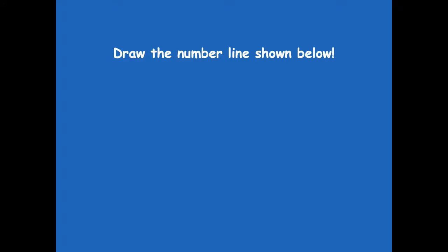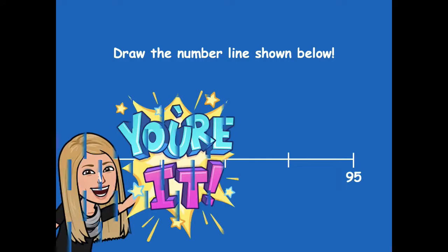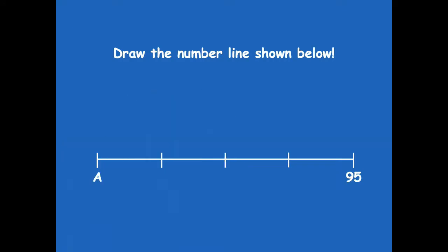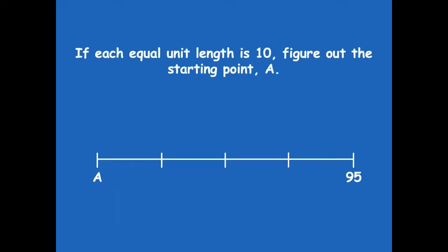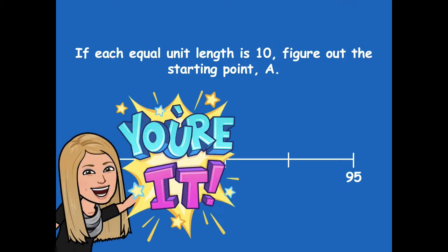I want you to draw the number line shown below. Pause the video, draw this number line, and click play when you're ready for the next step. If each equal unit length is 10, figure out the starting point, A. Pause the video, figure out what number would be at A, and then click play when you're ready to go over it together.